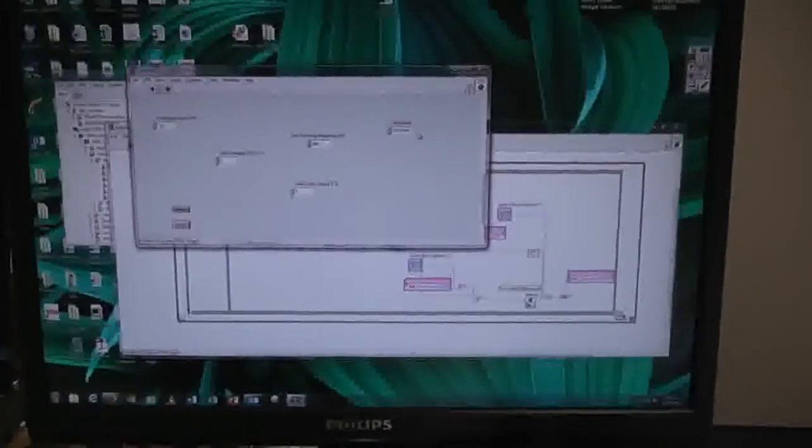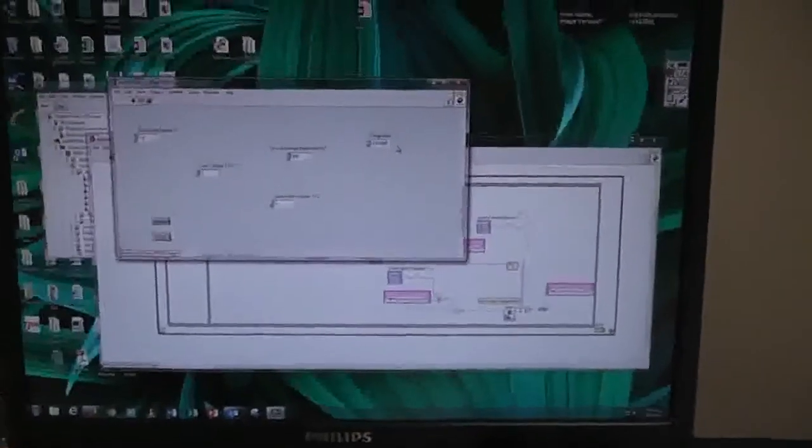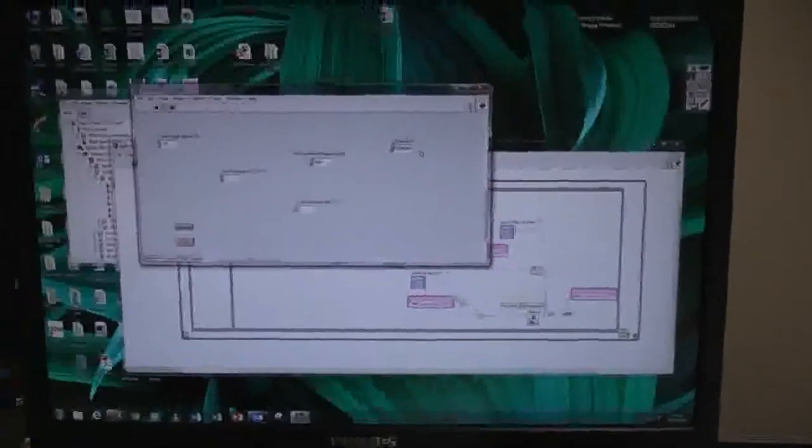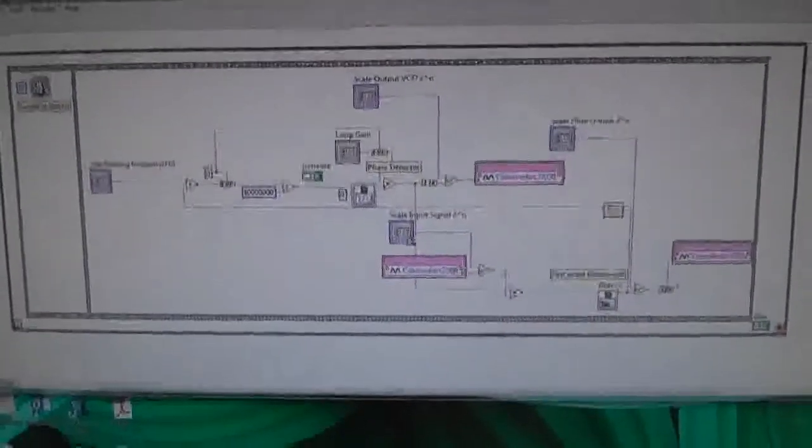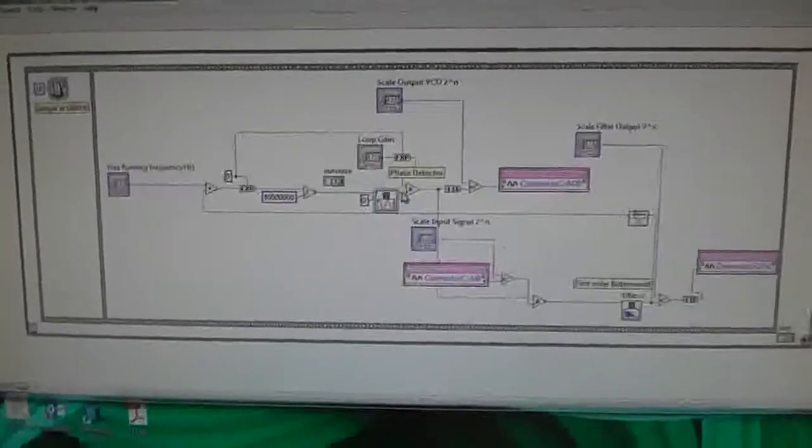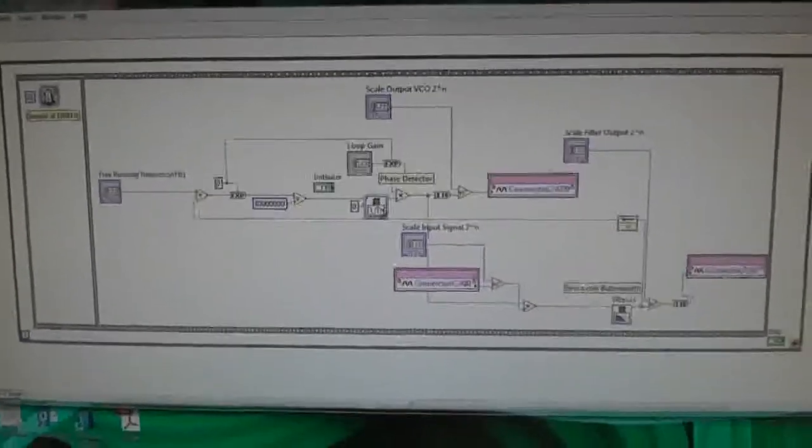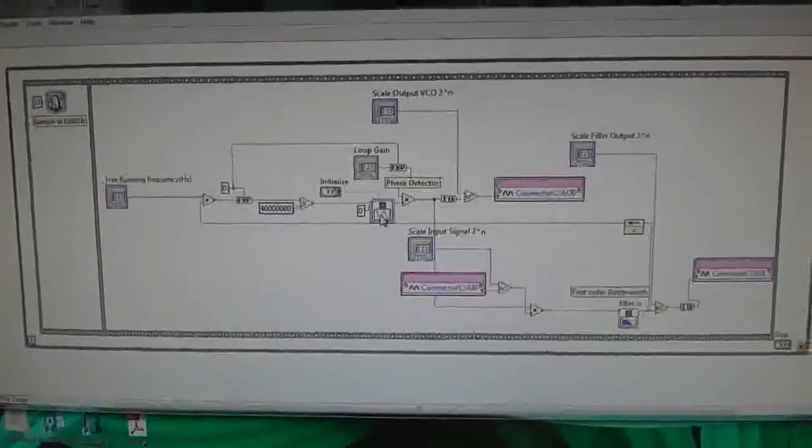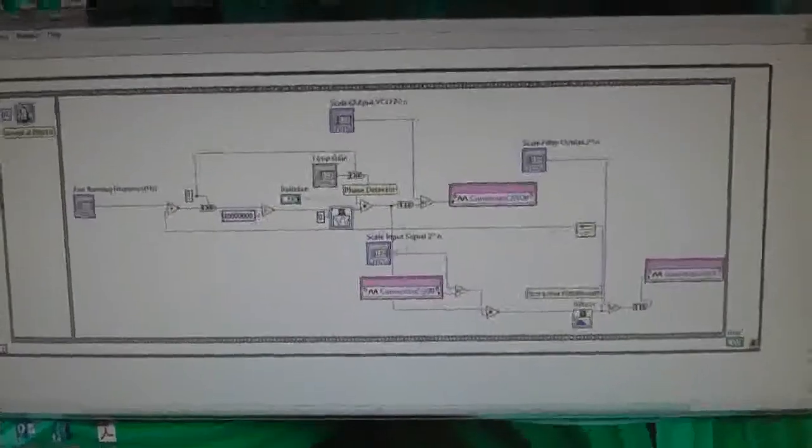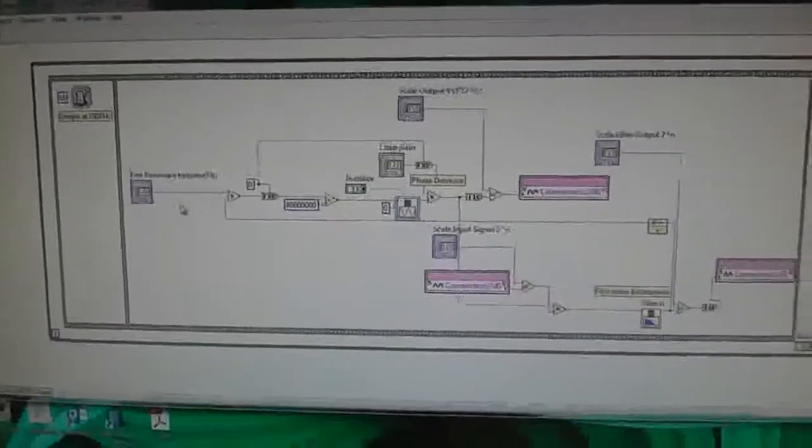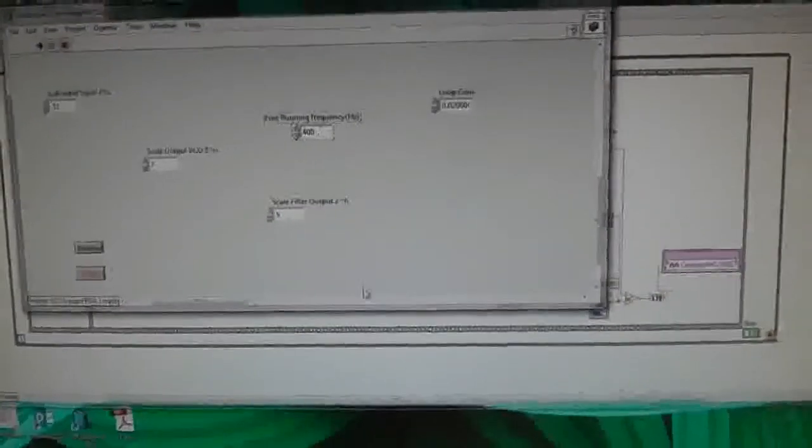That's FPGA-based phase-locked loop. That's the basic idea. If you didn't follow it the first time, here's the diagram again: the FPGA code, this phase detector, and here's the VCO. It then gets filtered and fed back into the VCO. The filter output goes back into the input of the VCO. There's a free running frequency which is 400 hertz and various gains. That's it.